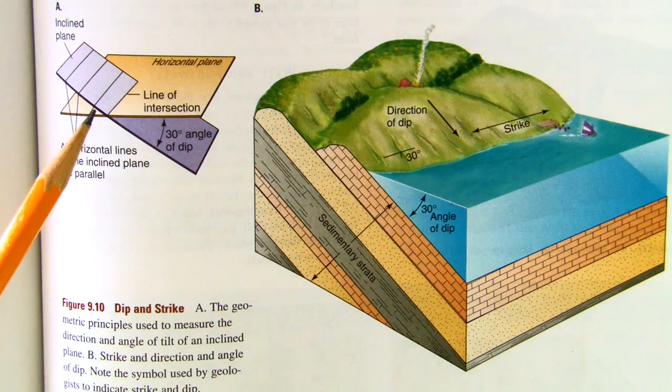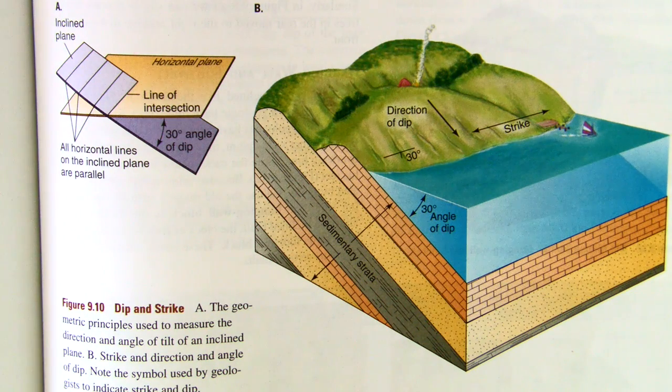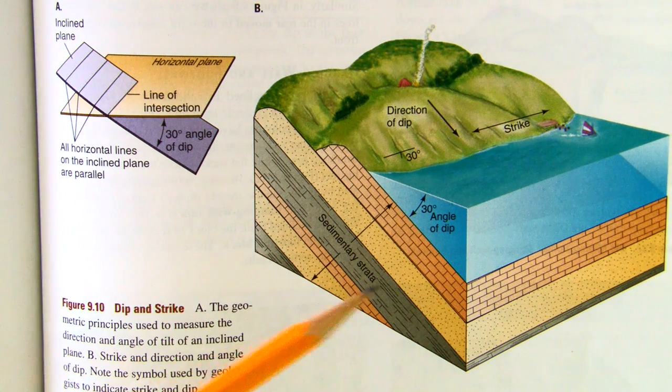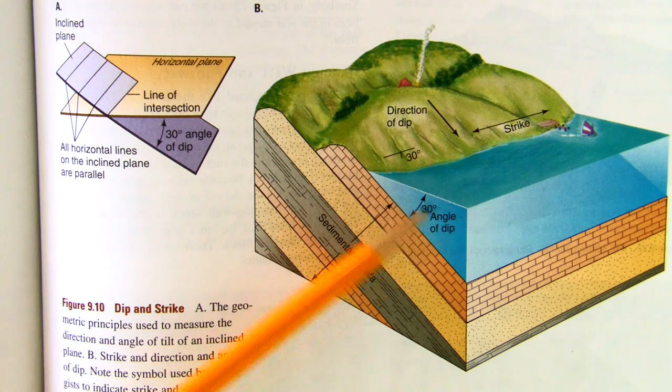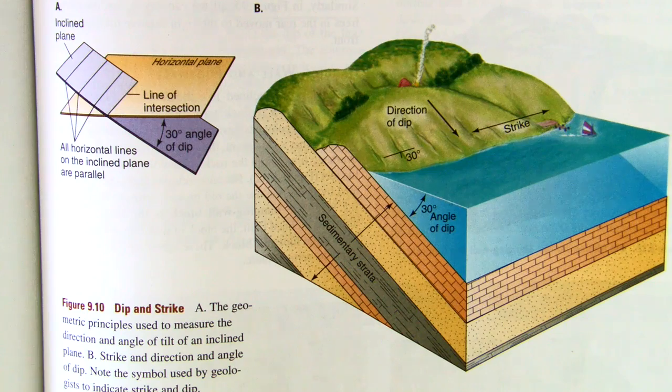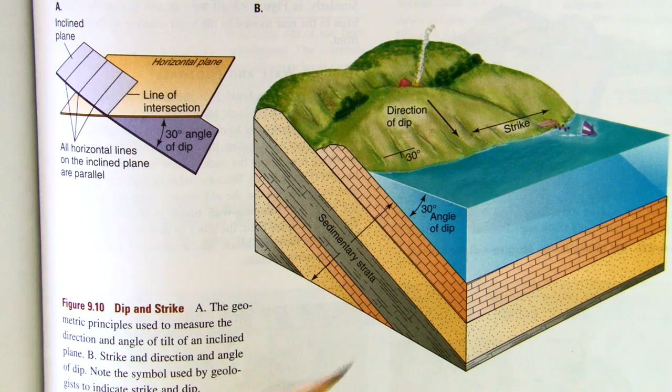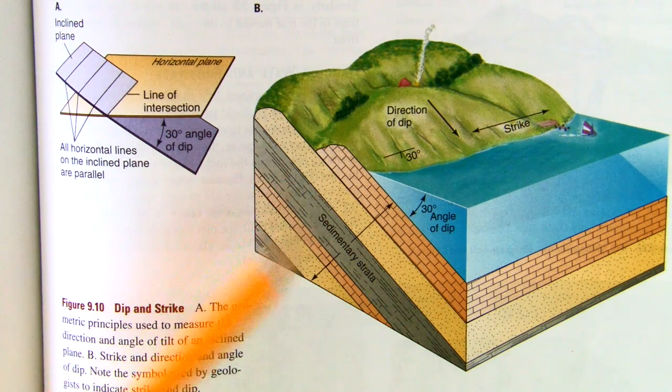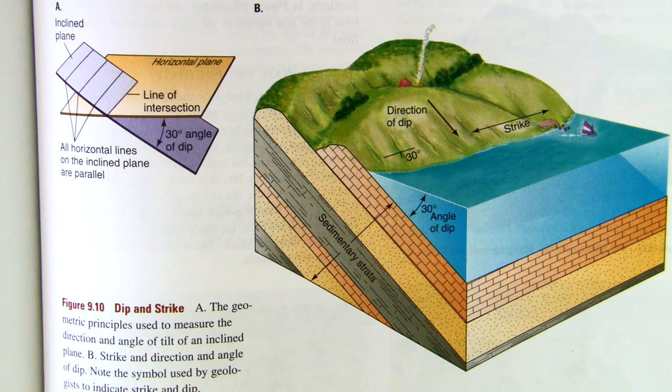This straight line is what we're going to call the strike. Now look over here in this example. We have a horizontal plane, typified by the lake surface there. And then we have layers of rock coming up from the ground at an angle.